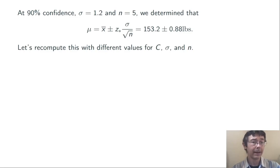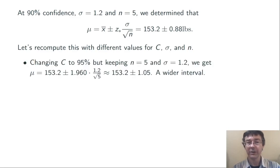So, let's conclude by going back to the confidence interval that we built, which was a 90% confidence interval with standard deviation 1.2 and n equals 5, and let's go modify the values for C, σ, and n and see the effects on the margin of error. If we keep everything the same except for the confidence level, increasing the level of confidence from 90% to 95%, now we have a z* of 1.960, leading to a margin of error of 1.05. So, as we expect, we have a wider confidence interval, a larger margin of error.